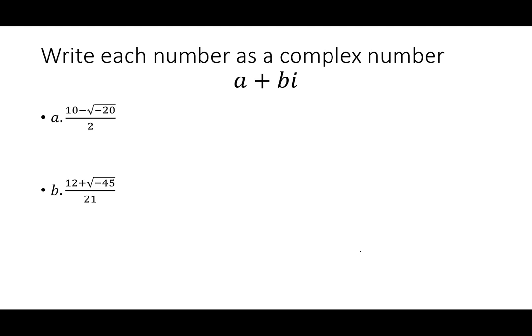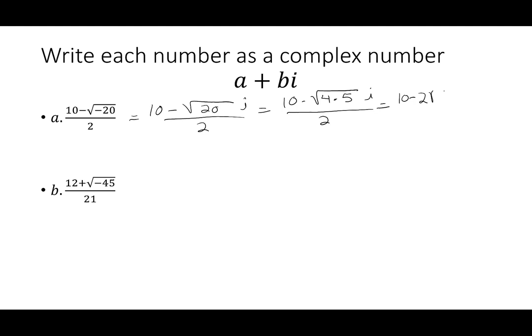Let's try a rational example: 10 minus the square root of negative 20, all over 2. Keep the 10, keep the minus. The square root of 20 times i goes in the numerator over 2. Since 20 is 4 times 5, the square root of 4 is 2, giving us 10 minus 2 square root of 5i, all over 2. Split the denominator across both parts: 10 over 2 is 5, and the 2's cancel on the imaginary part, leaving 5 minus square root of 5i. The denominator distributes to both the real and imaginary parts.